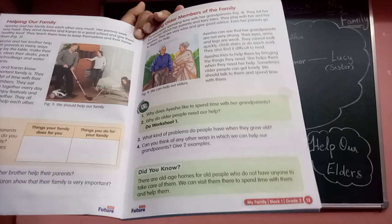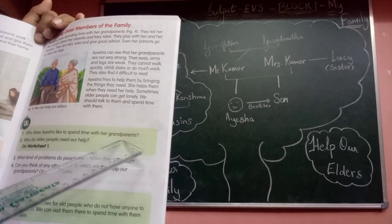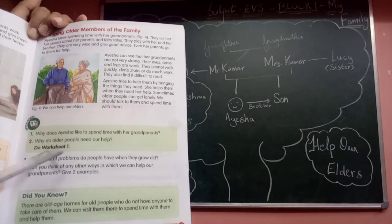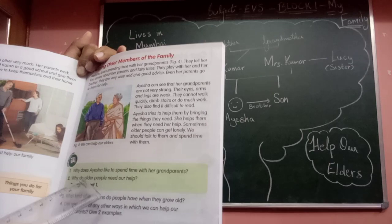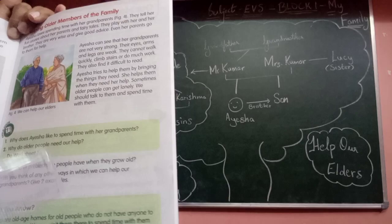I will give you notes for: how Aisha and Karan help their parents, how Aisha and Karan show that family is important, and why Aisha likes to spend time with her grandparents. Also answer the worksheet question: why do older people need our help? As they get older, they become weaker and don't have as much strength as we do — I will provide notes for this too.